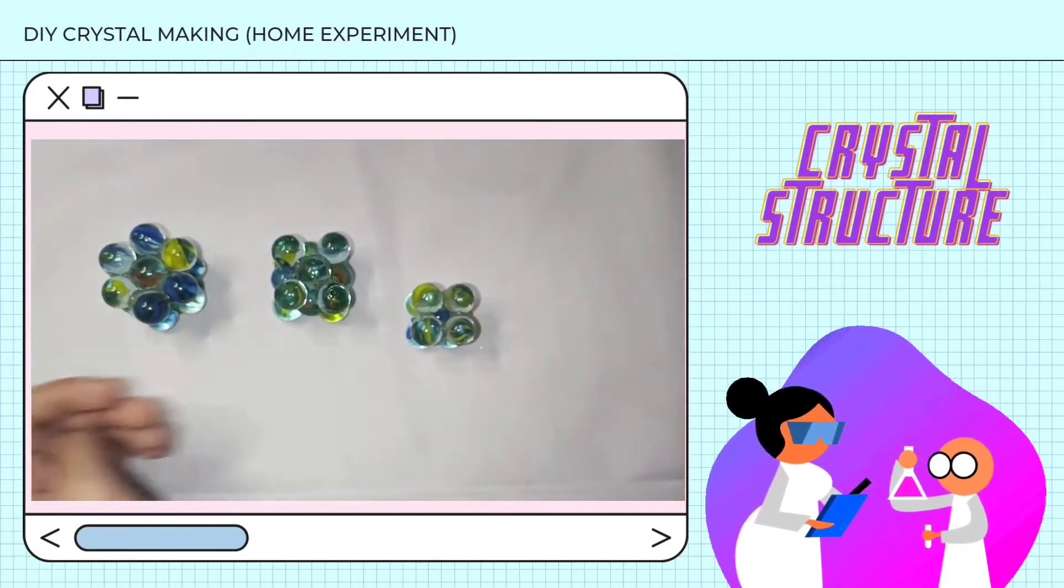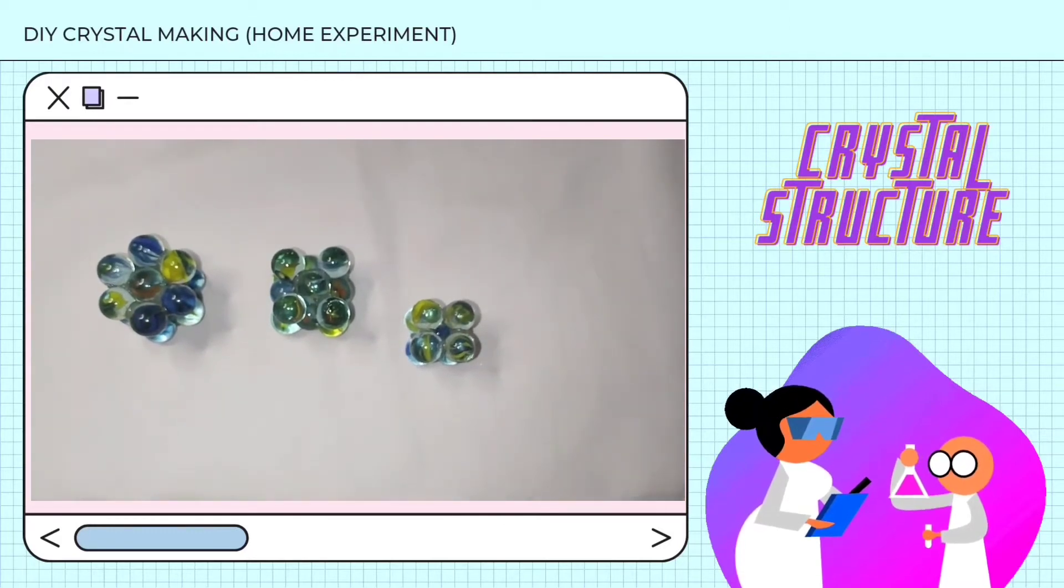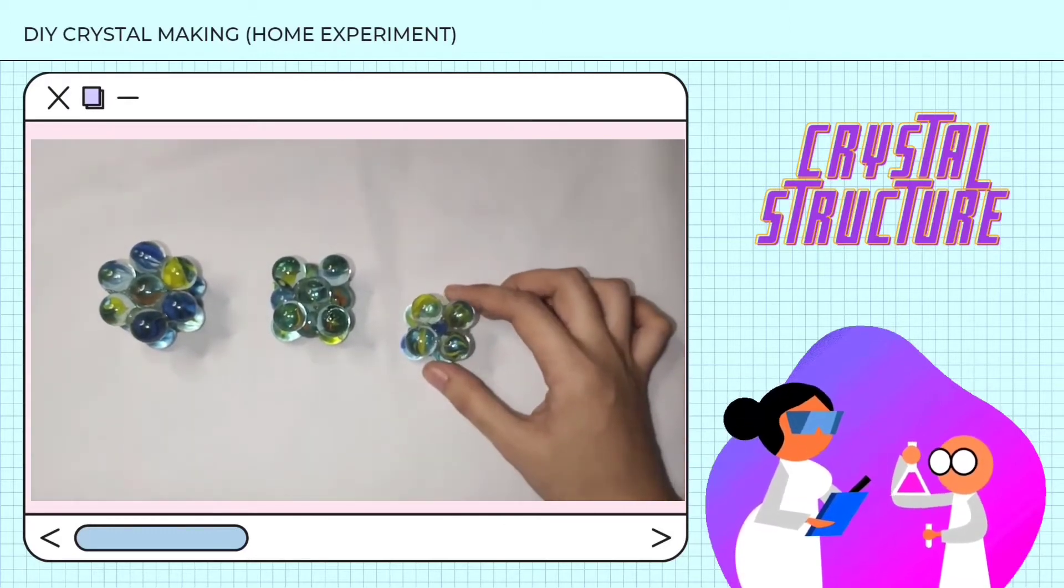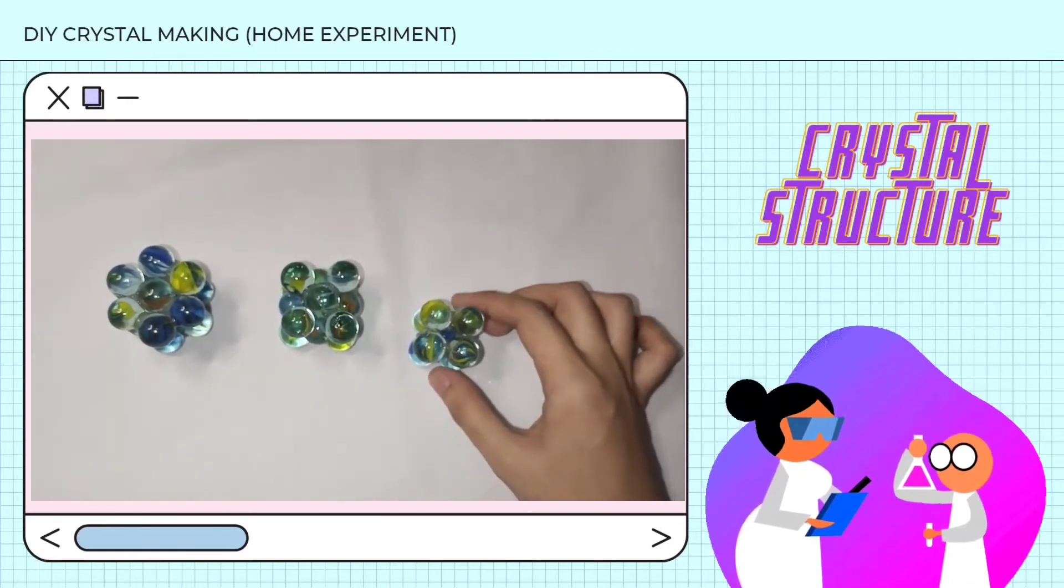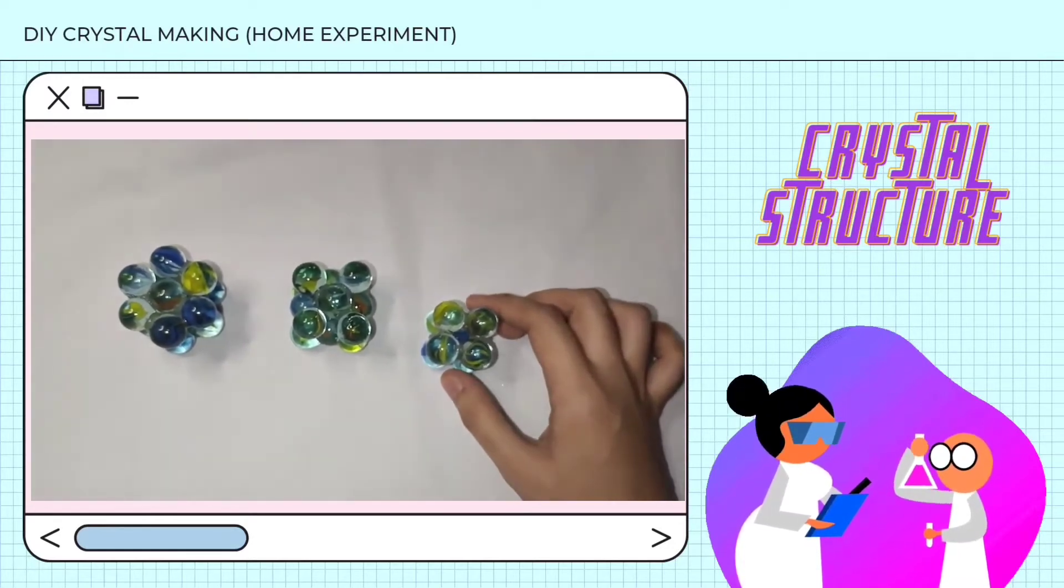Examples of this are chromium, iron, and vanadium. It has the least packing factor among the three, which is 0.68, has a coordination number of 8, and contains 2 atoms per unit cell.